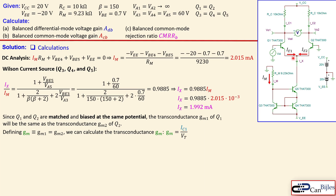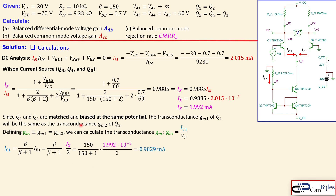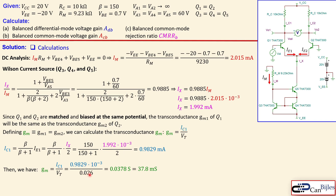The emitter current Ie1 = Ix/2, and the collector current Ic1 is related to Ie1 through the beta expression, accounting for non-zero base currents. Substituting beta = 150, we get Ic1 = 0.9829 milliamps. Now we can calculate the transconductance: gm = Ic1 / Vt = 0.9829 mA / 26 mV, giving us the transconductance value needed for the next steps.